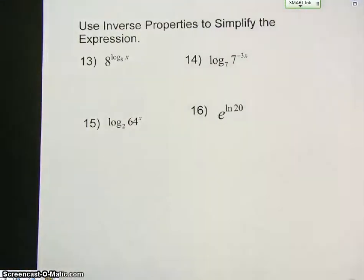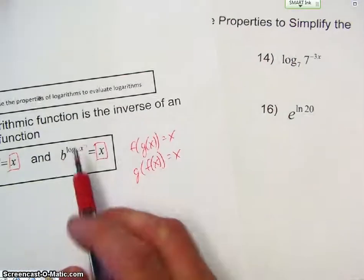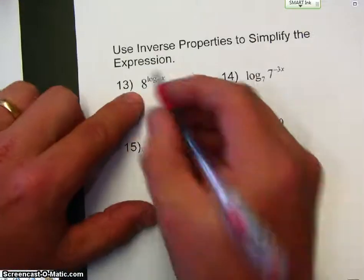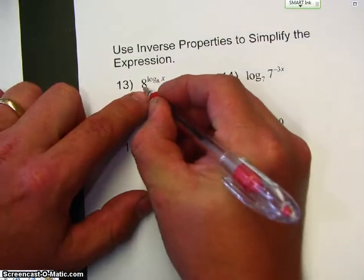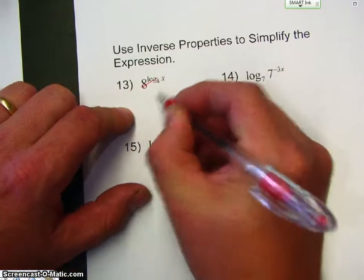For the first one, number 13, I'll be using this one. So, this 8 is the base of this, and 8 is the base of this log, so those cancel out, so I'm just left with x.